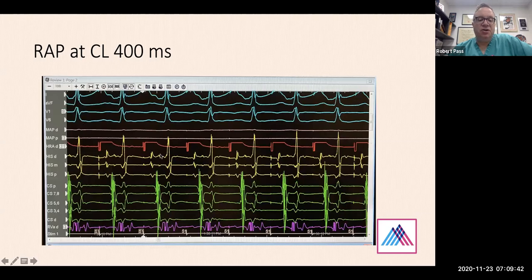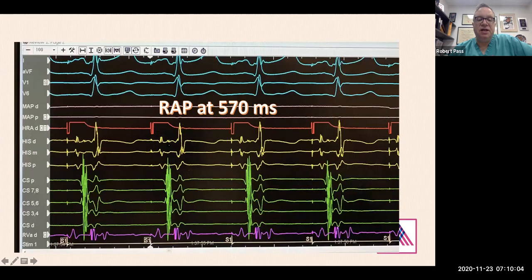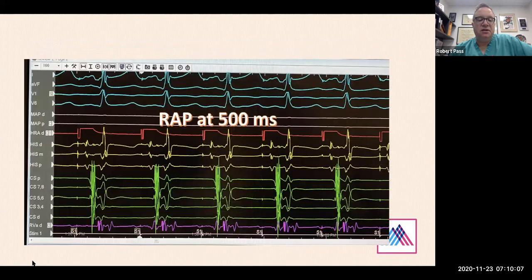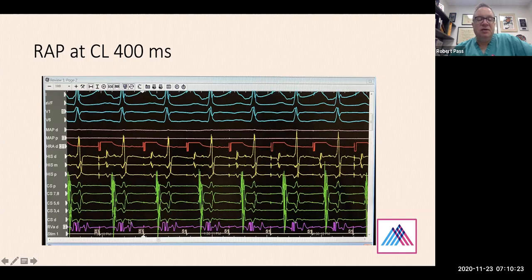Now at cycle length 400 — a rate of 150 beats per minute. We're slowly seeing the AH interval lengthen even more. Comparing this AH interval to when we were at 570, it looks a fair bit longer at 400. This is still a very reasonable AH interval — if I'm guessing, about 80 to 90 milliseconds — because this is a young, healthy person with normal AV node conduction.